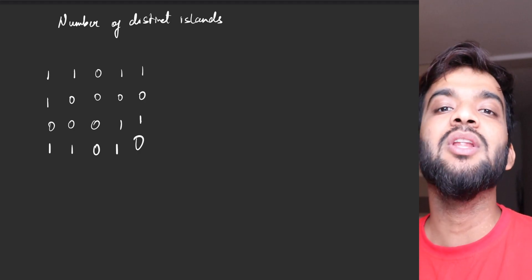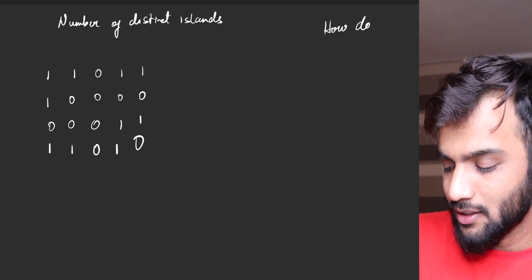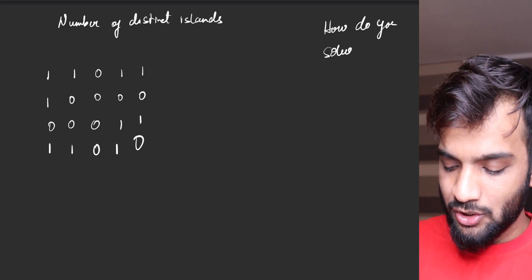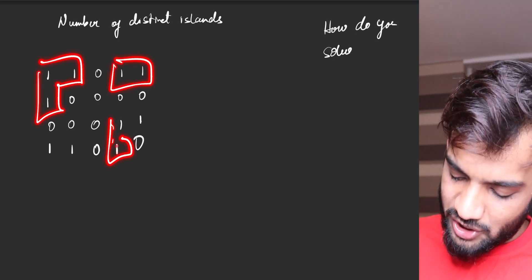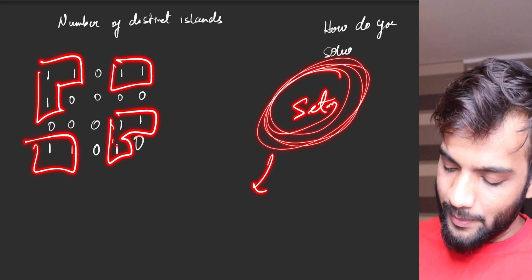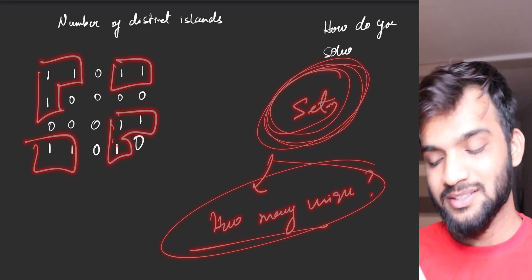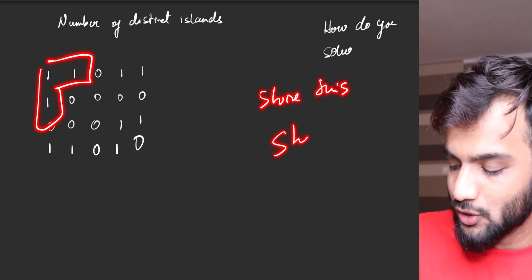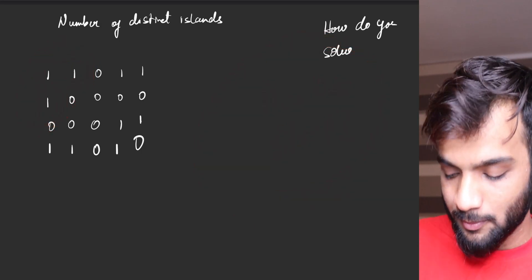So how do you solve this problem? One approach: you can store the shape of each island in a set data structure, and the set will tell you how many unique shapes there are. But how do I store this shape? If I can figure out a way to store the shape, I should be able to solve this problem.